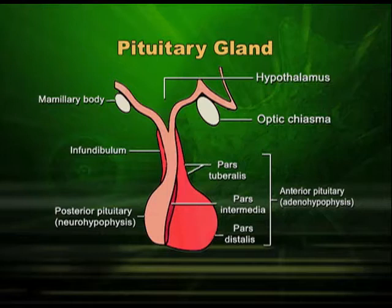The neural lobe is directly connected to the hypothalamus — you can say it is an extension of the hypothalamus. Whereas the anterior lobe and the intermediate lobe are indirectly connected to the hypothalamus; they have no direct connection. Also, in human beings, the anterior lobe and intermediate lobe are merged. So pars distalis does the function of both. In lower mammals, you do find all three lobes in a distinct manner.